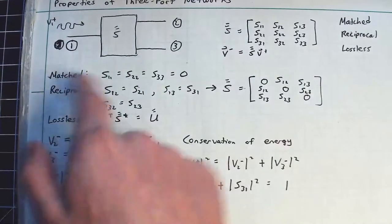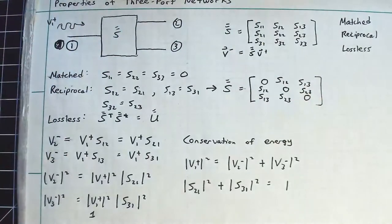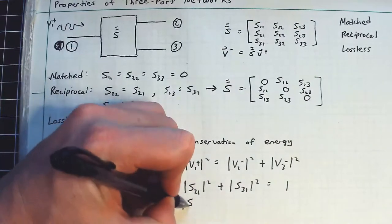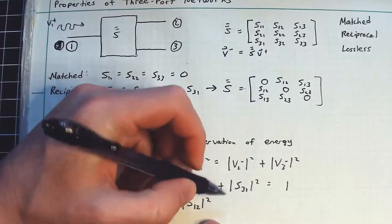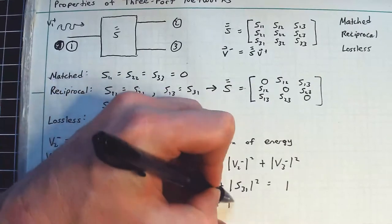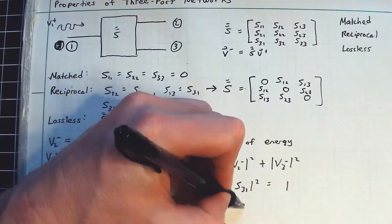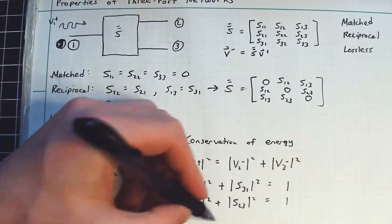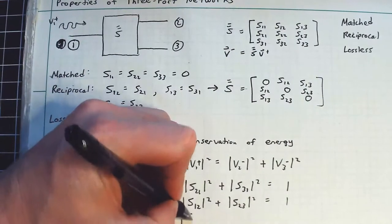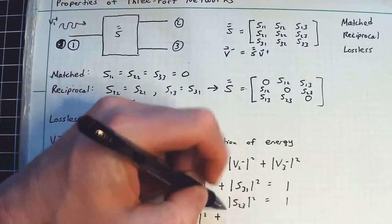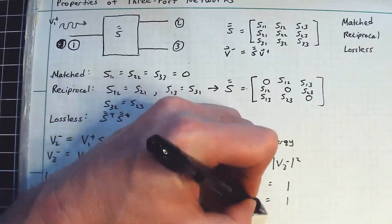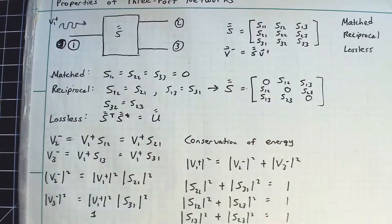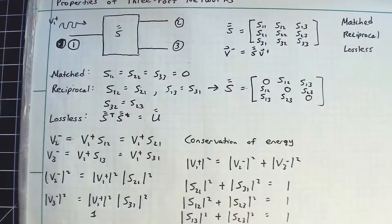And if I then repeat the argument over this node here and these other guys over here, you'll find something like |S12|^2 plus |S23|^2 is equal to 1. And then we'll also have the condition that |S13|^2 plus |S23|^2 is equal to 1. So whichever port I excite, power in has to equal power out.